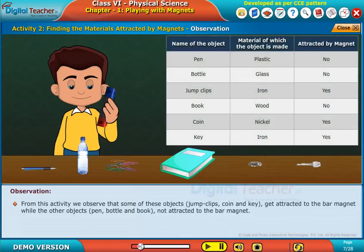From this activity, we observe that some of these objects like jump clips, coin and key get attracted to the bar magnet while the other objects like pen, bottle and book not attracted to the bar magnet.